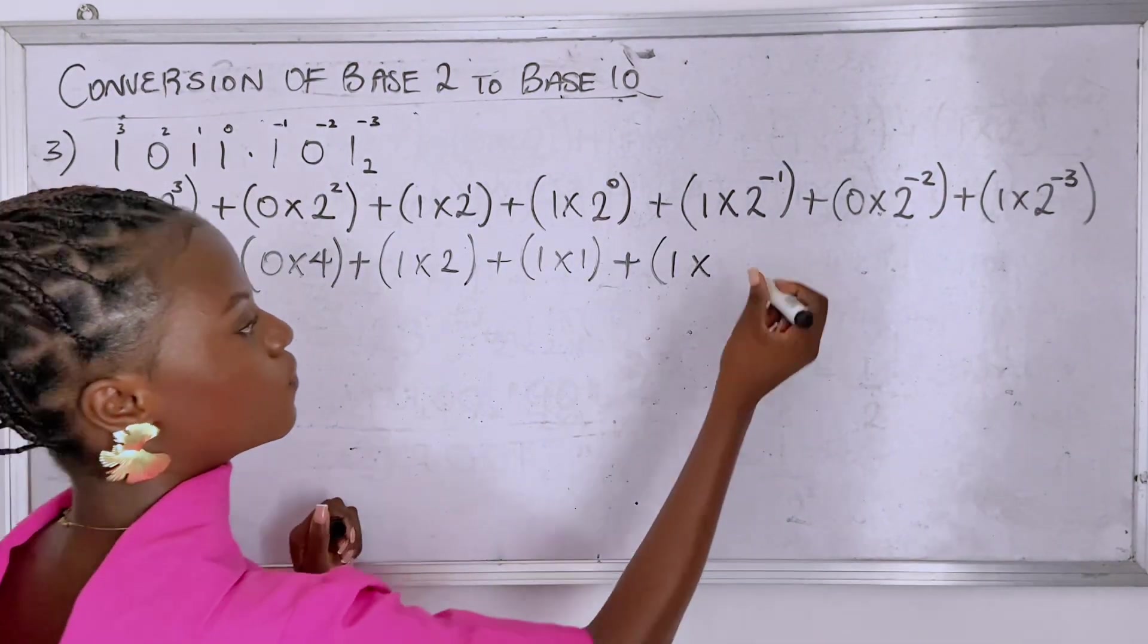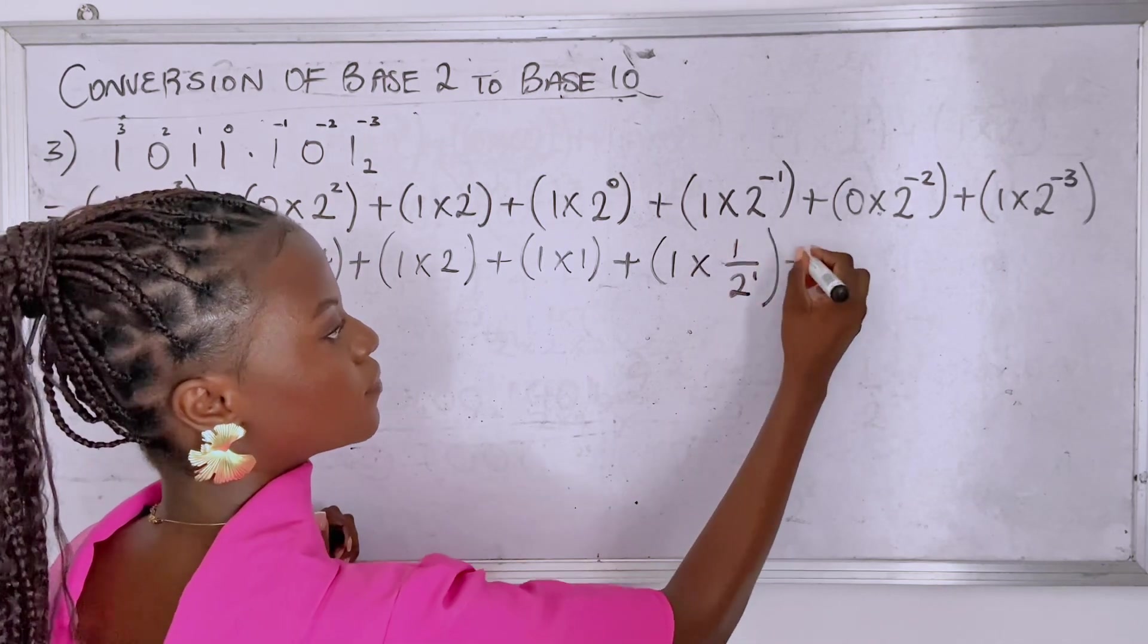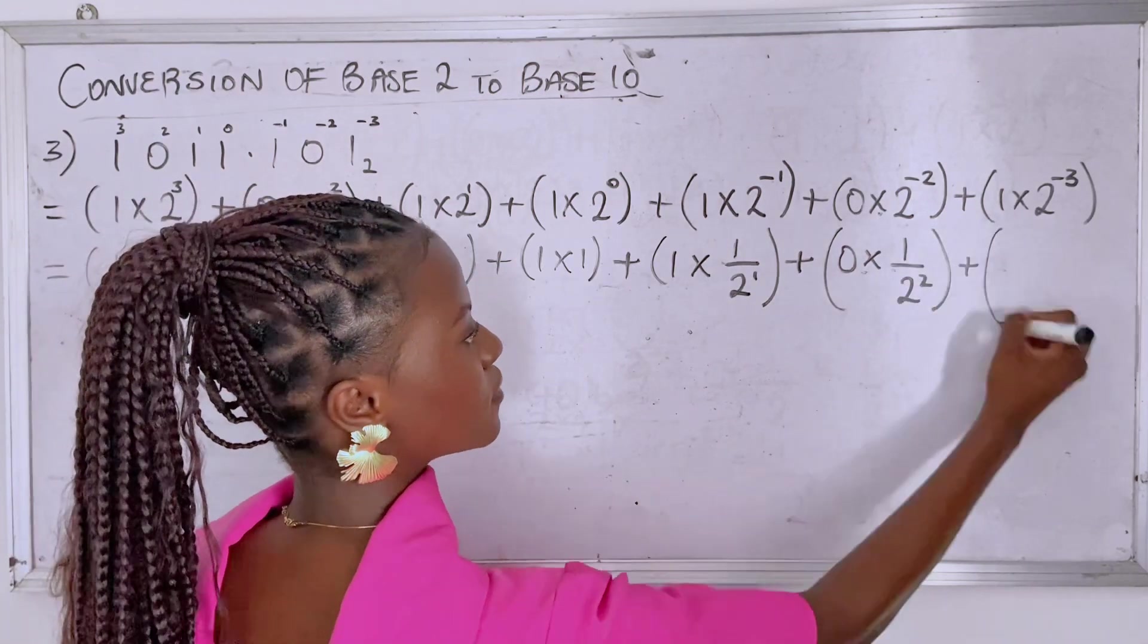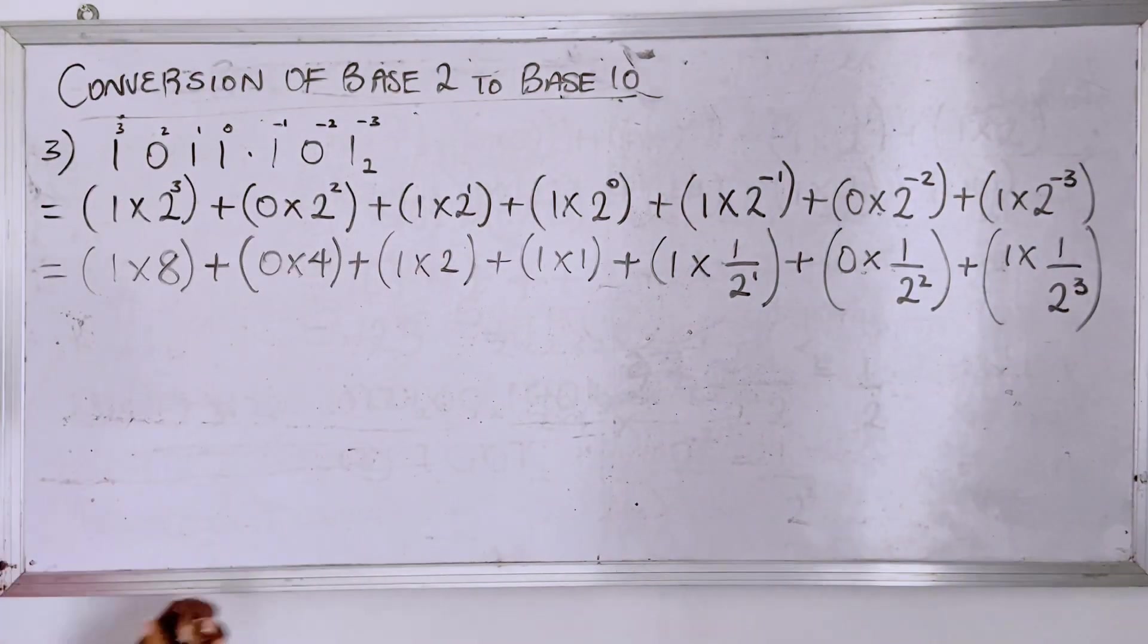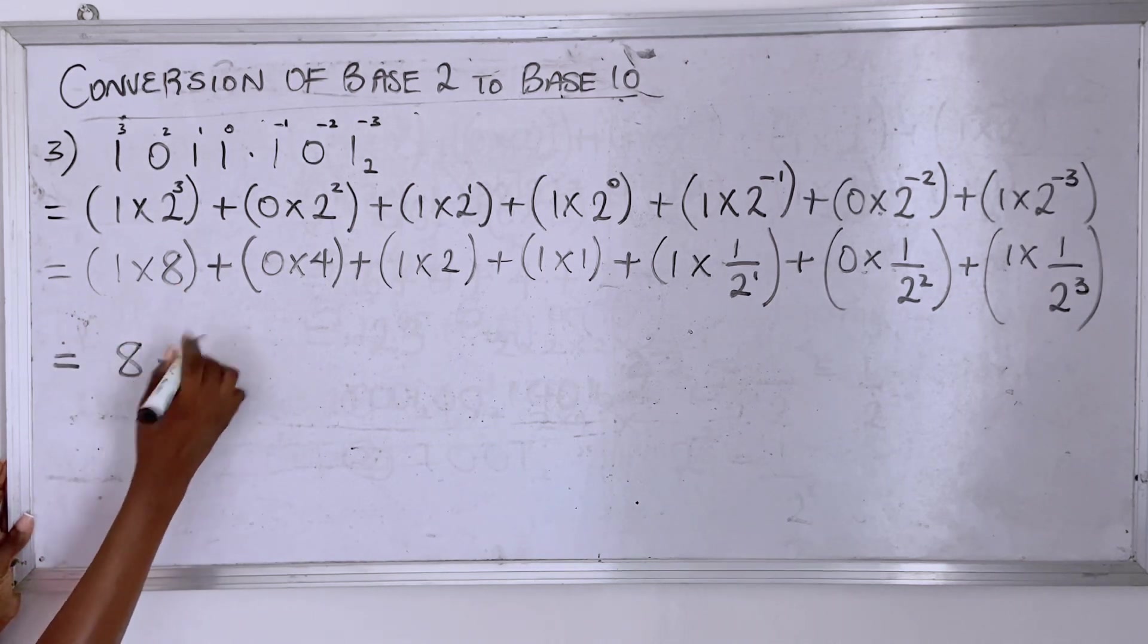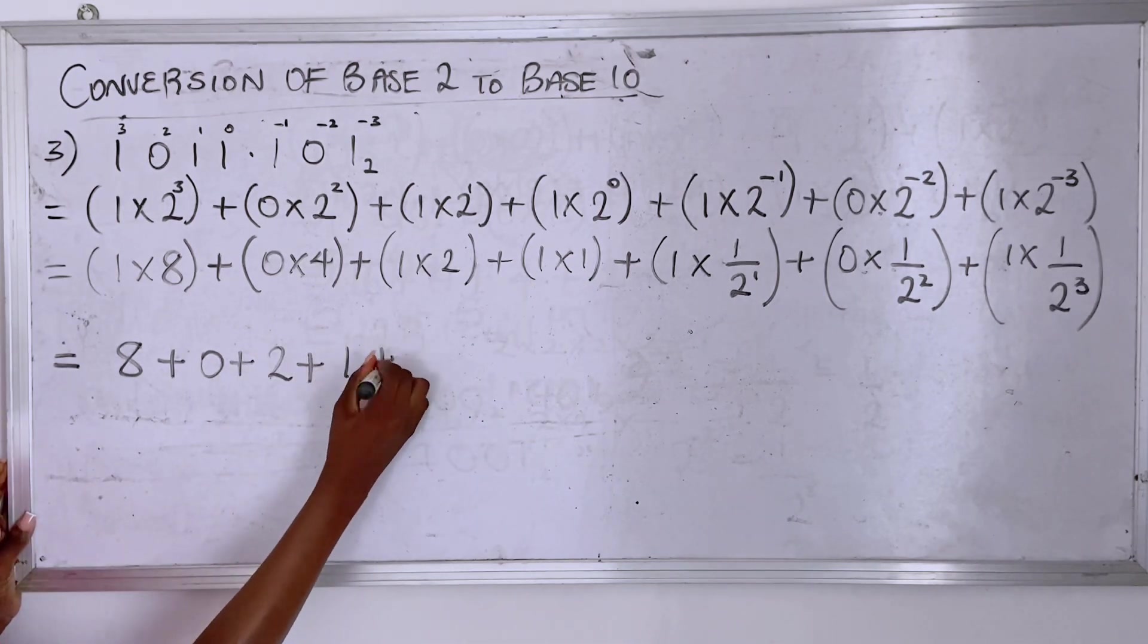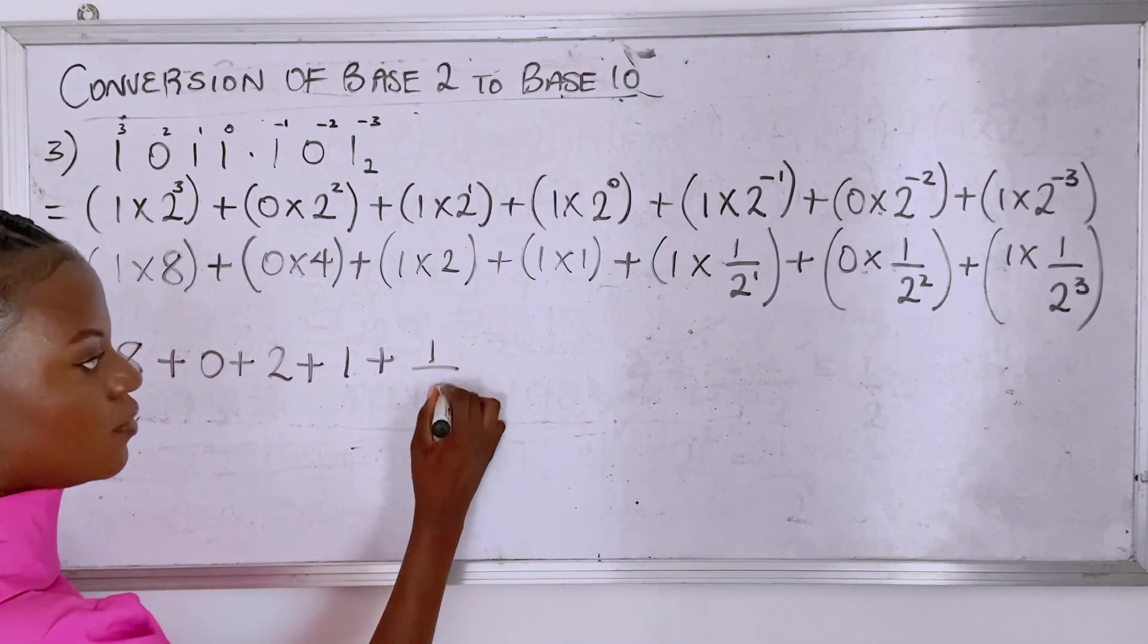So we have one over two raised to the power one plus zero times one over two raised to the power two plus one times one over two raised to the power three. One times eight is eight plus zero times four is zero plus one times two is two plus one times one is one plus one times one over two is one over two.